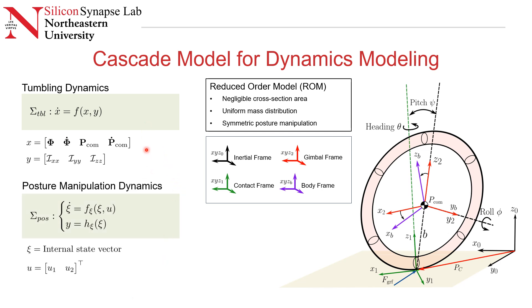We can define the posture manipulation dynamics. The inertia of the robot is a function of the shape of this elliptical ring. We can define that using two control inputs, U1 and U2, which define the two major and minor axes of this elliptical ring.